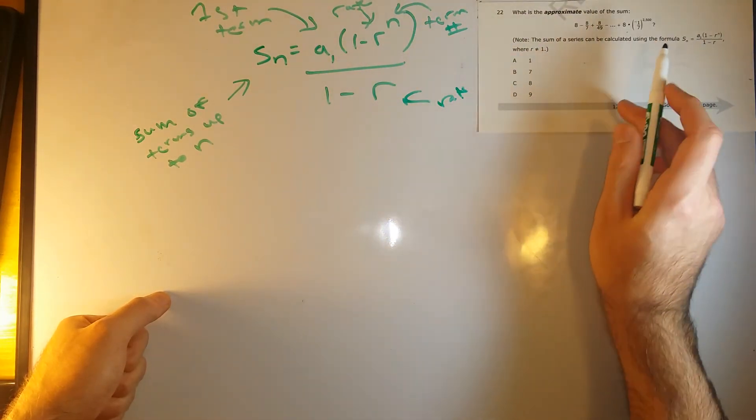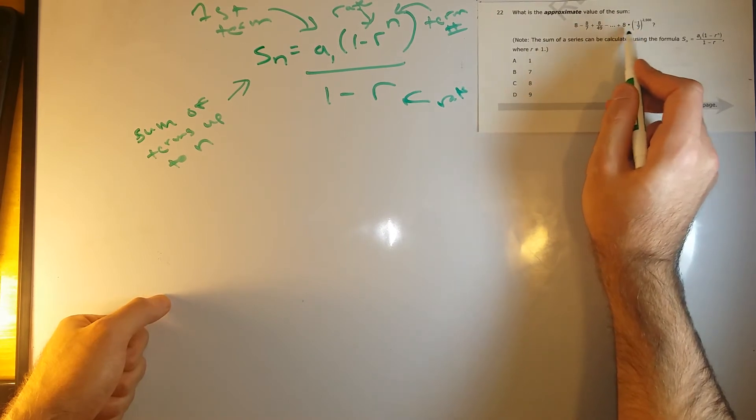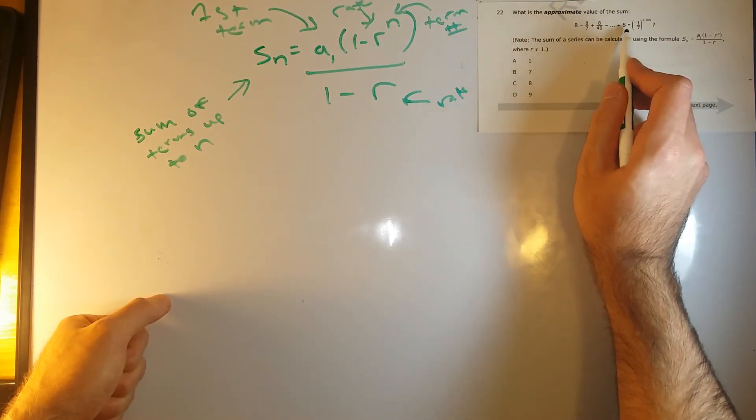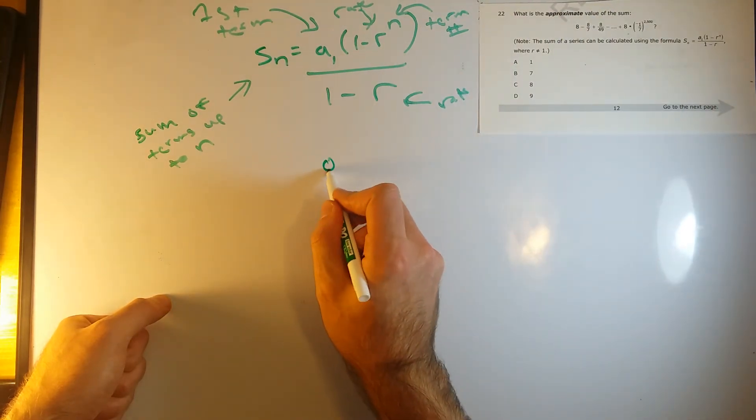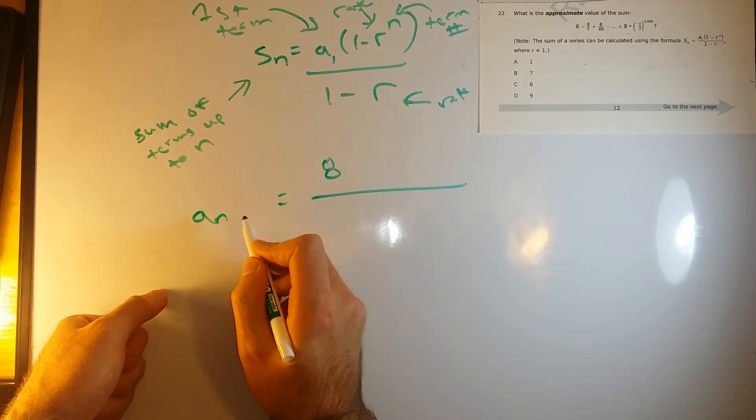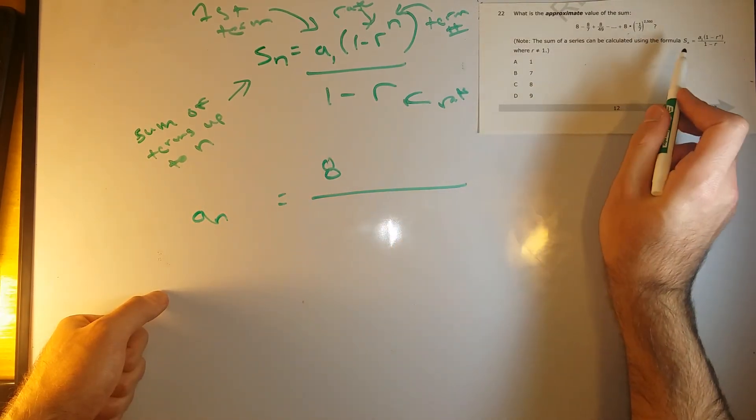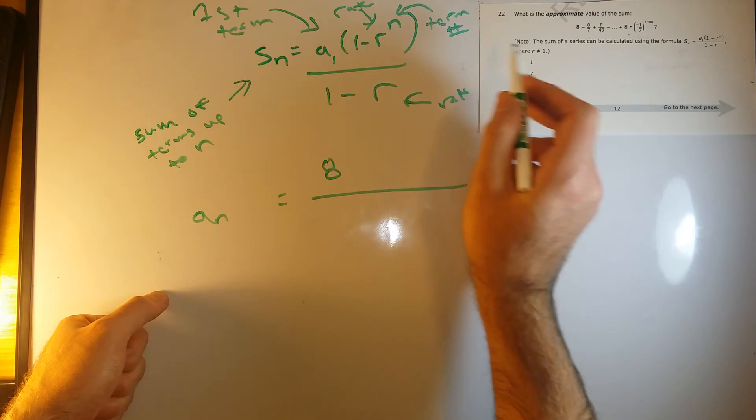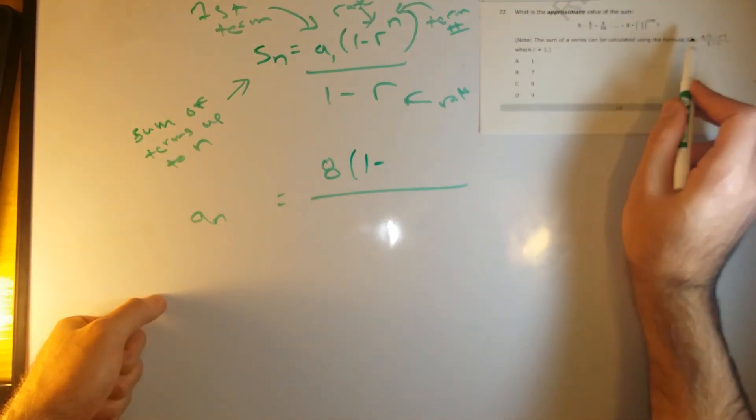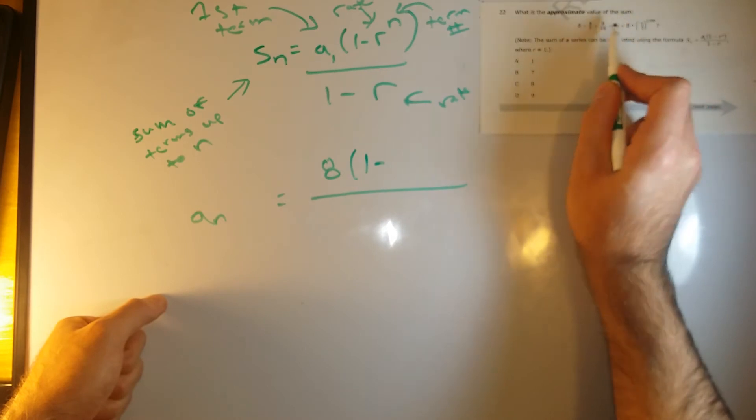So in this case, we have this piece of information here. This kind of gives us all of those parts. Basically, we have 8 as our initial term. So 8 is our initial term times 1 minus how much it's being multiplied by each time. That's negative 1 seventh.